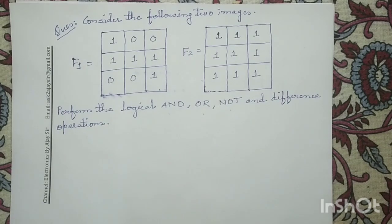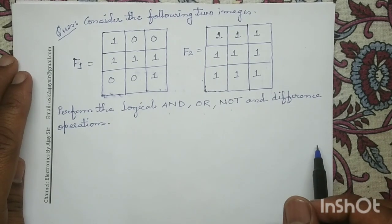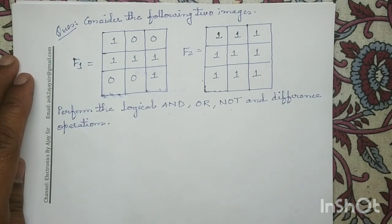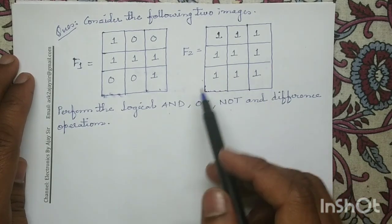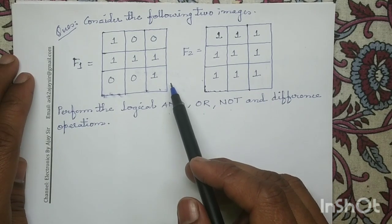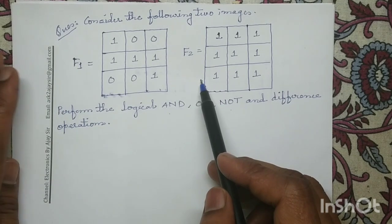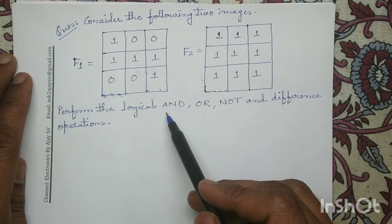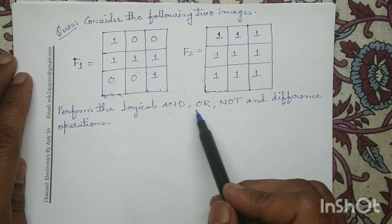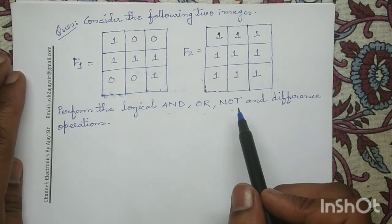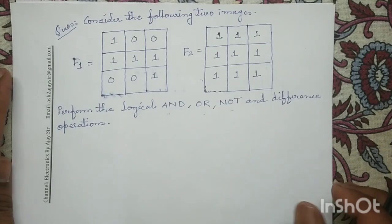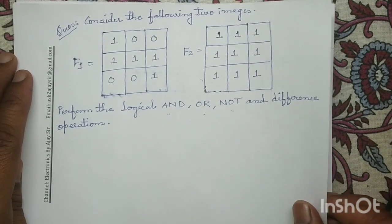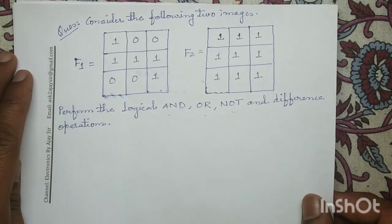Good morning all. Today we will solve a numerical question on logical operations on digital images. In this question, two 3x3 digital images F1 and F2 are given to us. On F1 and F2 we have to perform logical AND operation, OR operation, NOT operation, and DIFFERENCE operation. So let us solve this question.